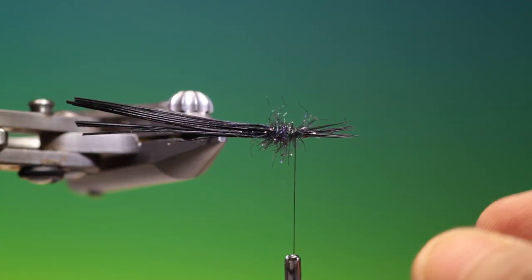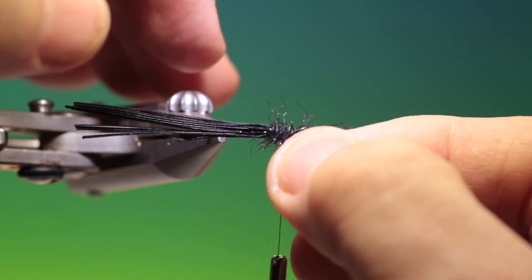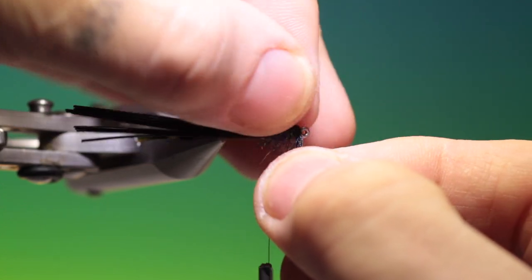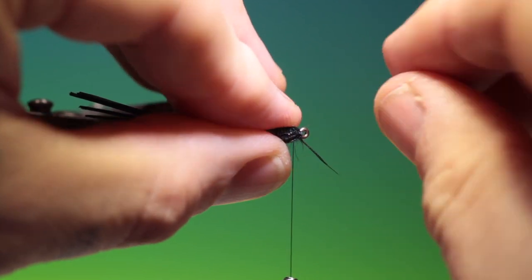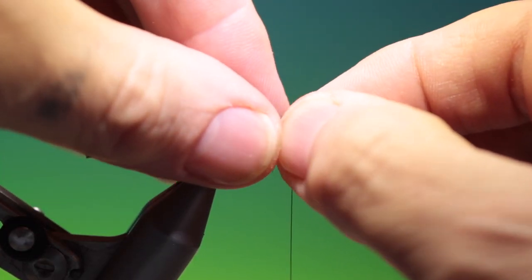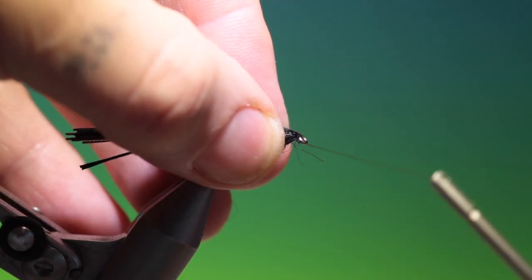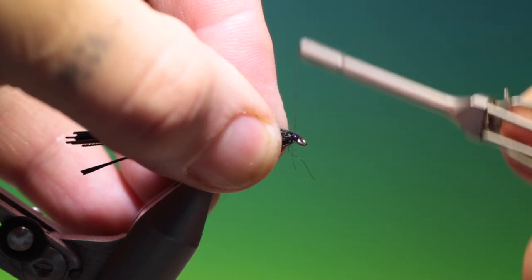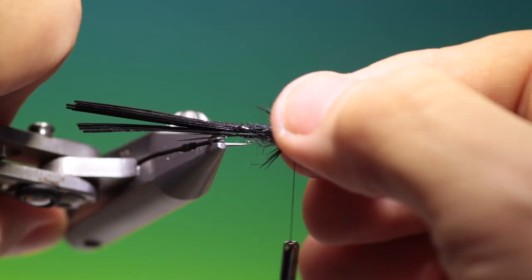Perfect. Just turn my vise that way. And we'll split these pheasant tail legs. Half and half, approximately each side. And we push these down, back and down. Like so. Then we can come in and just make a few turns there to hold them in position for the legs.